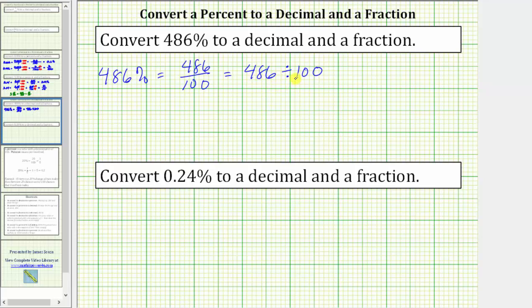486 divided by 100 equals 4.86 as a decimal. If we begin with 486, the decimal point is to the right of the six. If we move it left two places, one, two, this does give us 4.86.